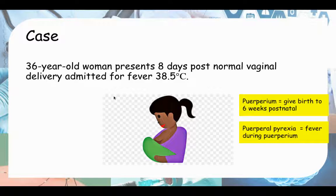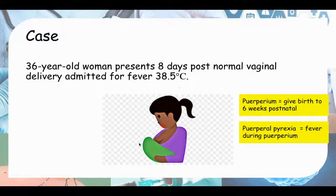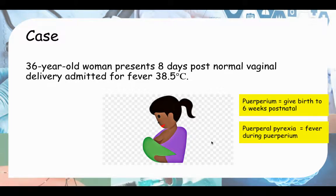Let's look at this case. It is a case of a 36-year-old woman presenting with eight days post normal vaginal delivery, admitted for fever of 38.5 degrees Celsius. With fever this high, you have to look at the patient and see whether they look very unwell, check their vitals — you're suspecting sepsis, and you need to take fast actions.